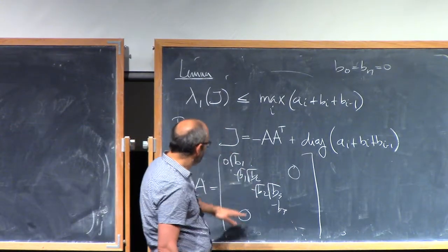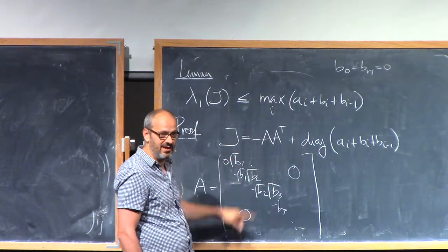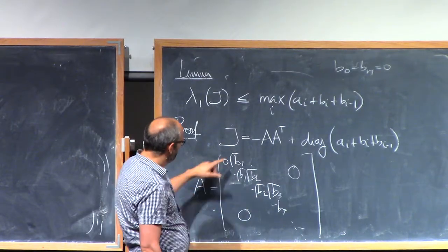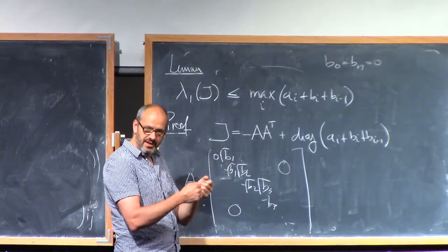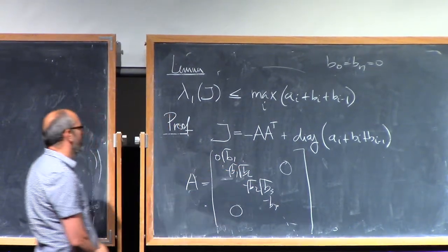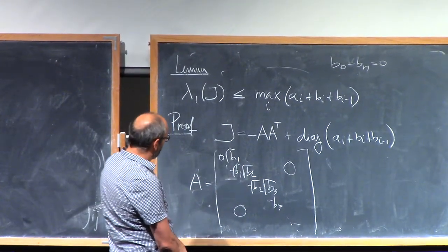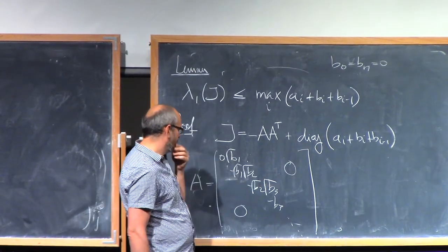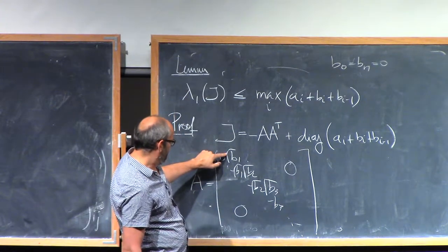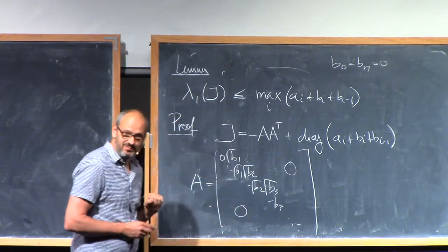If you take AA transpose, then the entries of this matrix are the inner products of the various rows of A. And as you can see, what's going to happen is when you take this inner product, then on the off-diagonal, if you're farther away from the diagonal than 1, you just get 0. If you're on the diagonal, you just get the sum of the squares of these entries. So the first diagonal will just have B1. The second one will have B1 plus B2, and so on. And on the other diagonal, you just have the Bs.